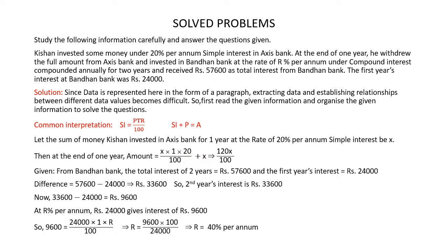On solving this, we get the amount as 120x divided by 100. Now Kishan invests this amount in Bandhan Bank for two years under compound interest at the rate of R% per annum.